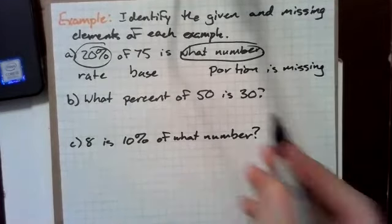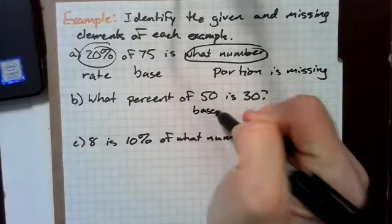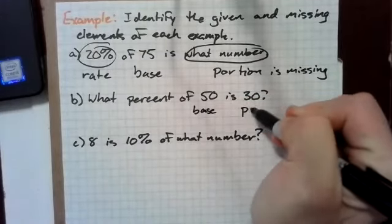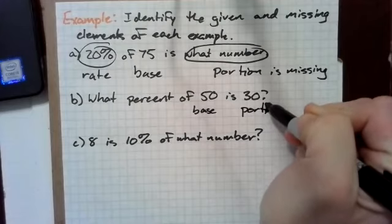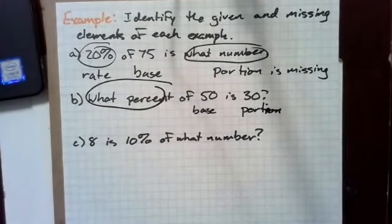What percent of 50, of 50, that makes 50 our base, is 30? Is 30 makes that our portion. So, we're missing our percent or the rate.